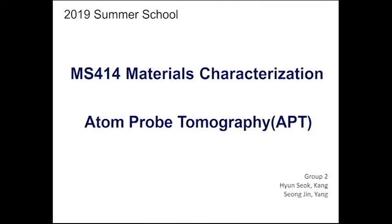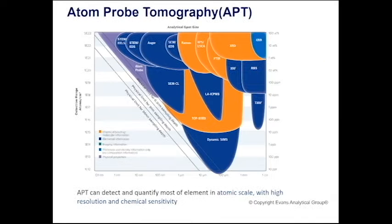Today we would like to talk about a very powerful material characterization tool named Atom Probe Tomography. Atom Probe Tomography, usually abbreviated as APT, is a material characterization method with very high spatial resolution and chemical sensitivity, detecting most elements in the atomic scale.